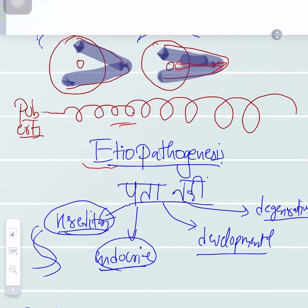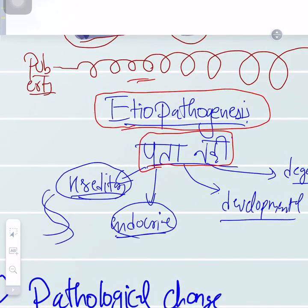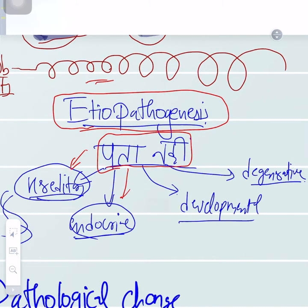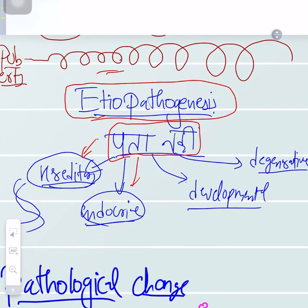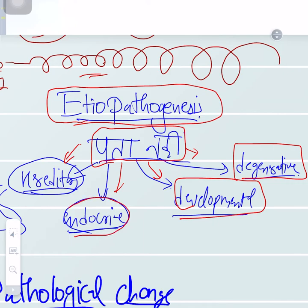Regarding the etiopathogenesis — the scientific way of saying 'we don't know' is idiopathic. Here we have hereditary causes, endocrine causes such as thyroid-related disease, congenital or developmental conditions occurring during development, or it could be a degenerative type of disorder.